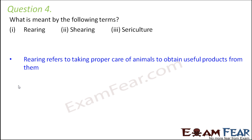Question number four: what is meant by rearing, shearing, and sericulture? Rearing is about taking good care of animals to obtain useful products from them. For example, we take care of cows for good quality milk, and we rear silkworms by feeding them properly, giving them proper temperature and humidity, so they remain in hygienic conditions and can lay their eggs properly.